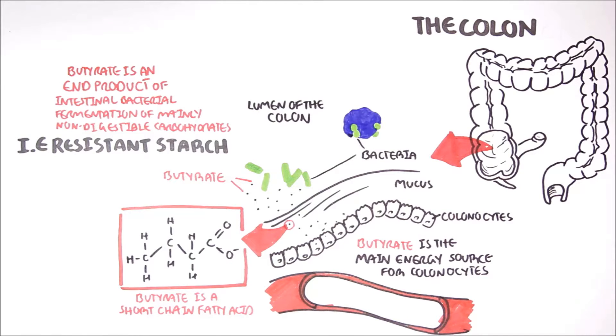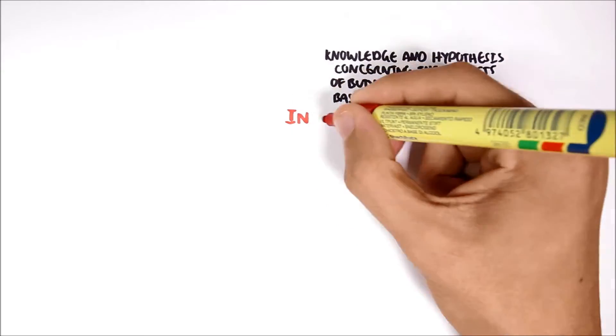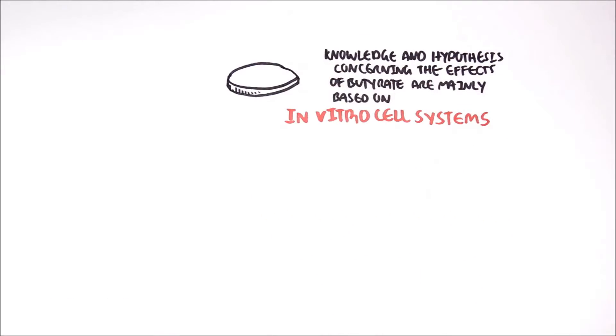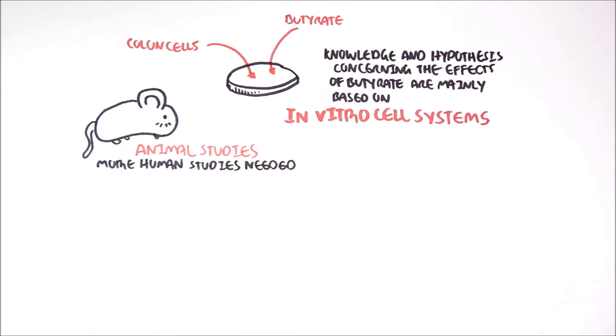There is increasing interest regarding the effects butyrate have on colon health. For example, studies have shown that butyrate prevents the development and progression of colon cancer. It should be pointed out, however, that the knowledge and hypothesis concerning the effects of butyrate are mainly based on in vitro cell systems and animal studies. More human studies are needed to support some of these findings. In this video, we will explore and discuss the effects of butyrate on colon health, based on current literature.